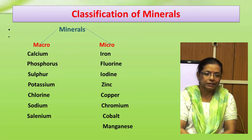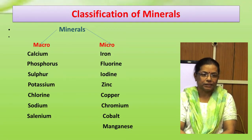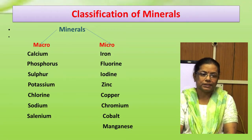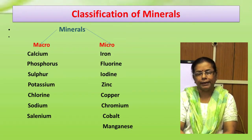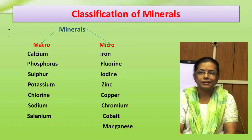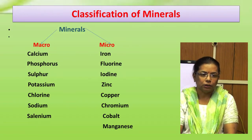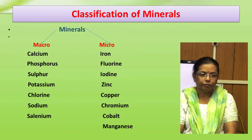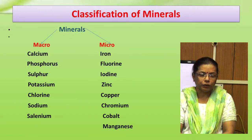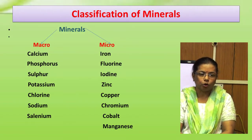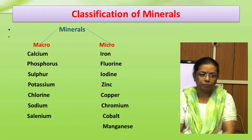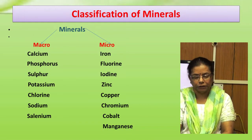Macrominerals include calcium, phosphorus, sulfur, potassium, chlorine, and sodium. Microminerals include iron, fluorine, iodine, zinc, copper, chromium, selenium, cobalt, and manganese.